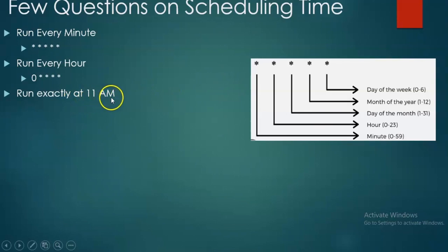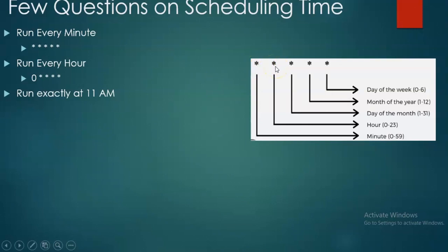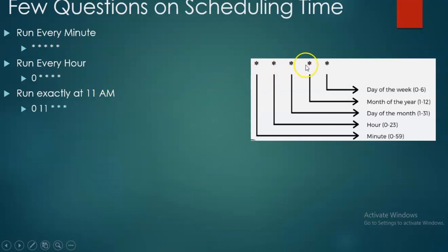Exactly at 11 AM, so instead of star we give zero for minutes and 11 for hours. For daily — day of month and month are stars because I need it every day and every month. So the syntax is: 0 11 * * *